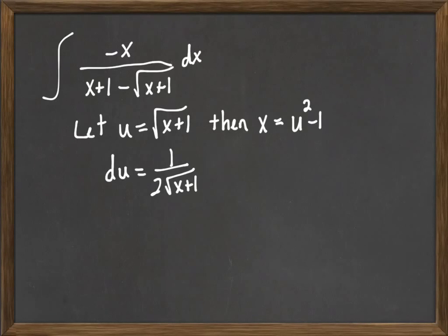So let's consider now what this leaves us with. First we have a negative x, and now when I look at that denominator, I have an x plus 1 minus the square root of x plus 1.